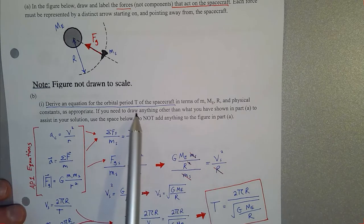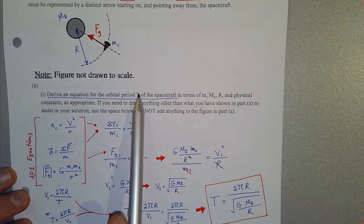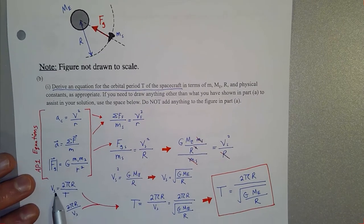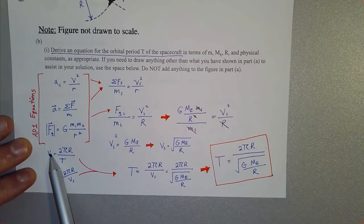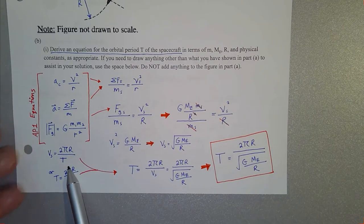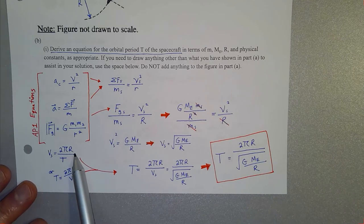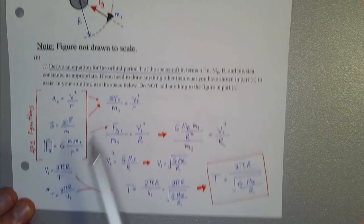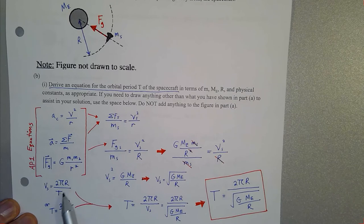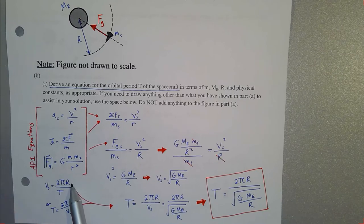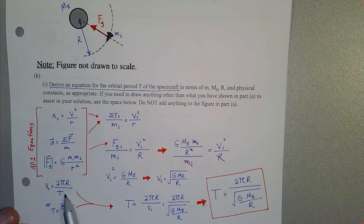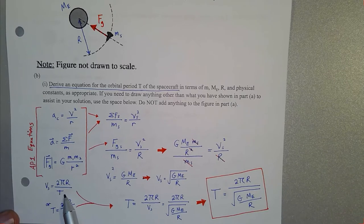Part B says: derive an equation for the orbital period — how much time it takes the spacecraft to go all the way around the Earth once at that radius of curvature. We need the expression only in terms of lowercase m (spacecraft mass), the mass of the Earth, and capital R (the orbital radius). Since the spacecraft moves at constant speed, velocity equals displacement over time. For one complete orbit, the displacement is the circumference 2πR, and the time is the period T.